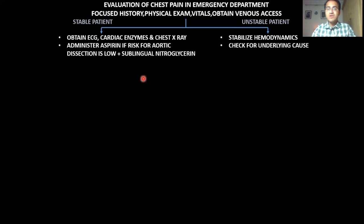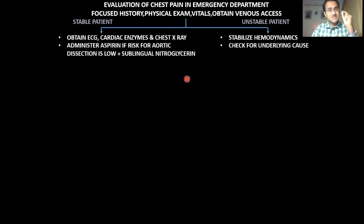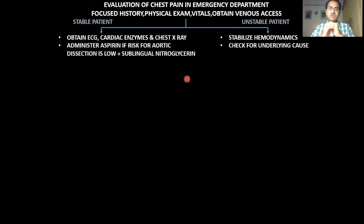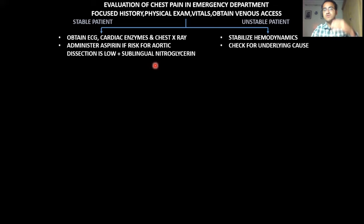Sublingual nitroglycerin causes vasodilation of the cardiac blood vessels, increasing blood supply to the heart. However, if the patient is hypotensive and bradycardic, there is a chance of inferior wall MI — a right-sided heart MI that causes vagal stimulation, dropping blood pressure and causing bradycardia. In such a case, do not give nitroglycerin because it will further exacerbate hypotension. Nitroglycerin causes venodilation, decreasing preload to the right side of the heart.